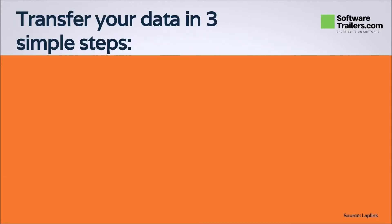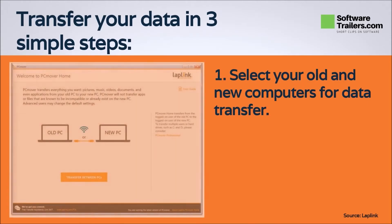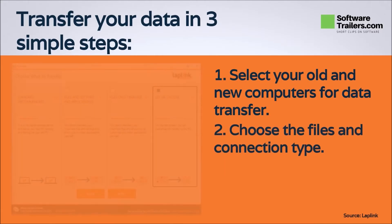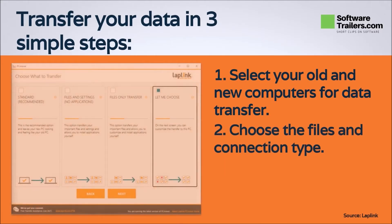By following these three simple steps, you will be able to transfer your files from one computer to another. First, start the transfer process by installing PC Mover on both computers. The software will identify both pieces of equipment and request the direction the transfer will take place. Next, select the types of files, settings, and user profiles you want to transfer to your new PC using the wizard.